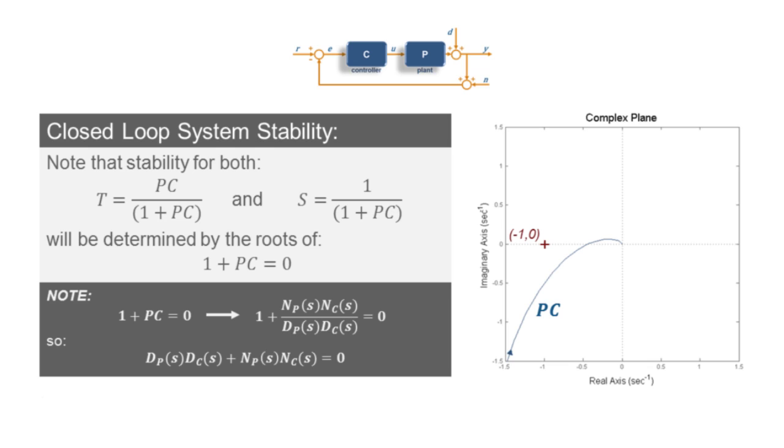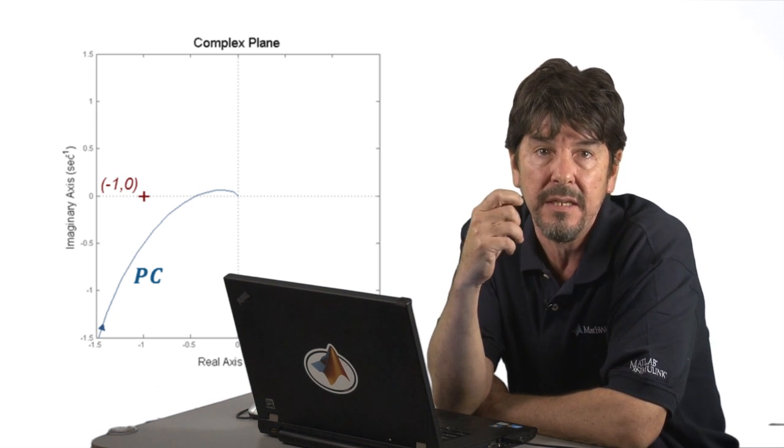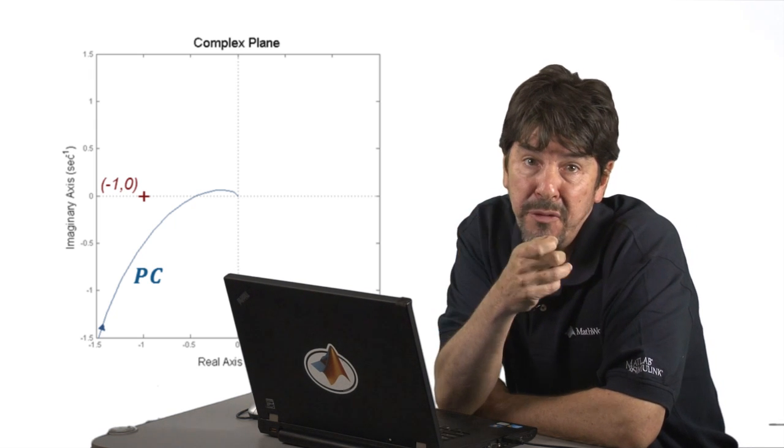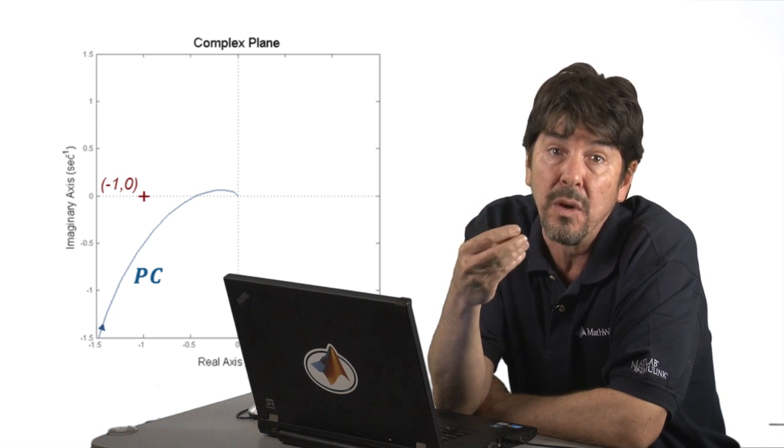or the Nyquist criterion, which determines the closed-loop system stability by relating the number of zeros and poles on your open-loop transfer function to the number of times the frequency trace in the Nyquist diagram encircles that minus 1 comma 0 point. Anyways, I don't want to overcomplicate this, so let me just assume that we have a simple, stable system. As I was saying before, the real question becomes how stable is it?